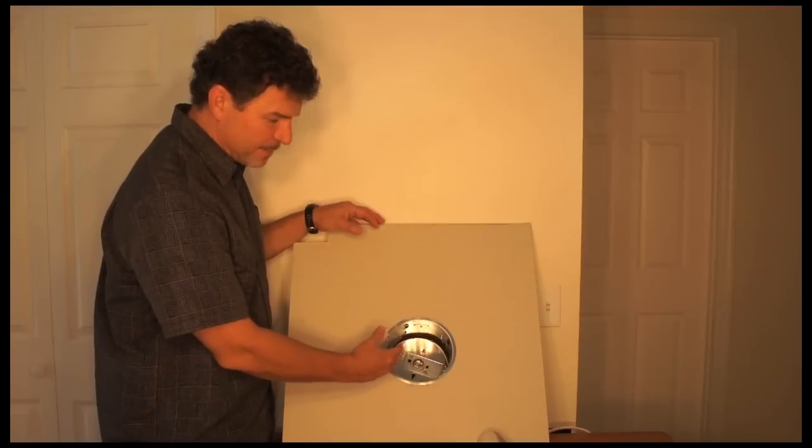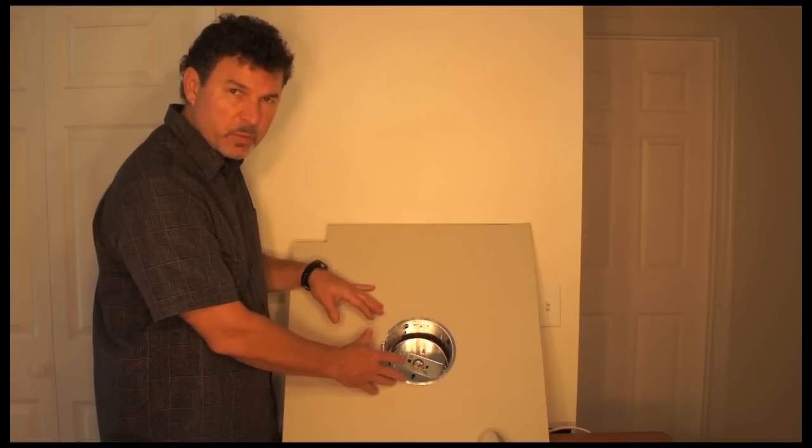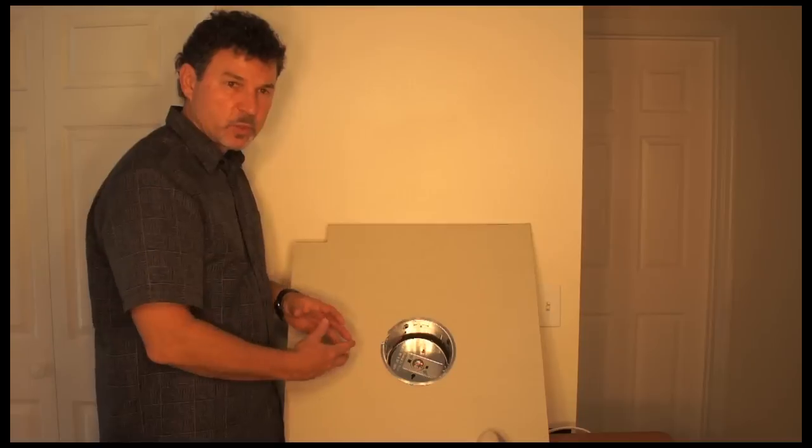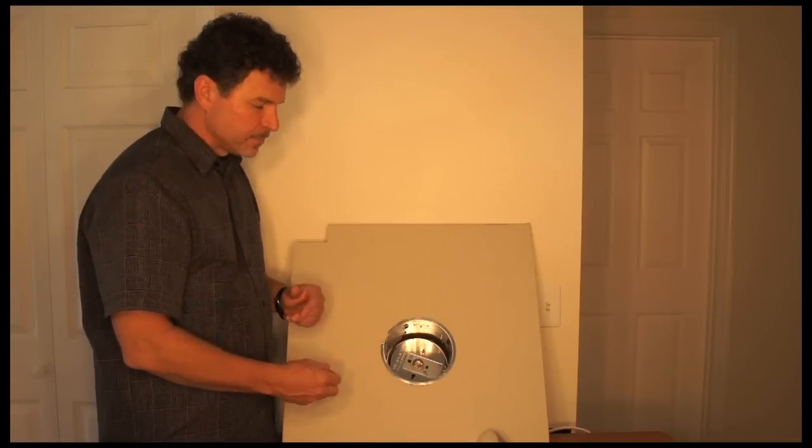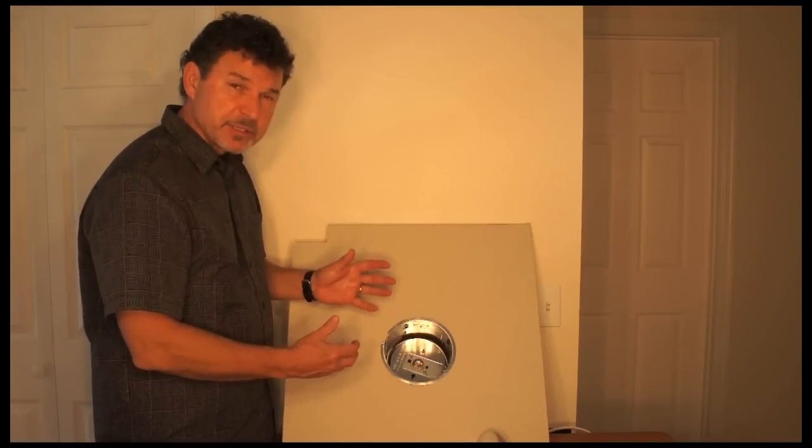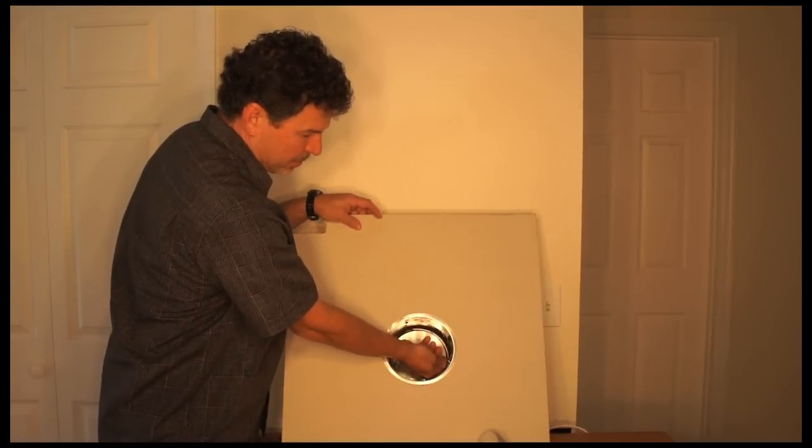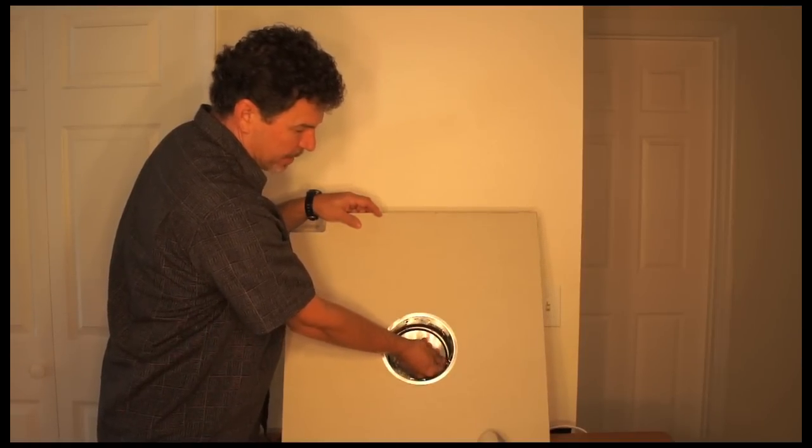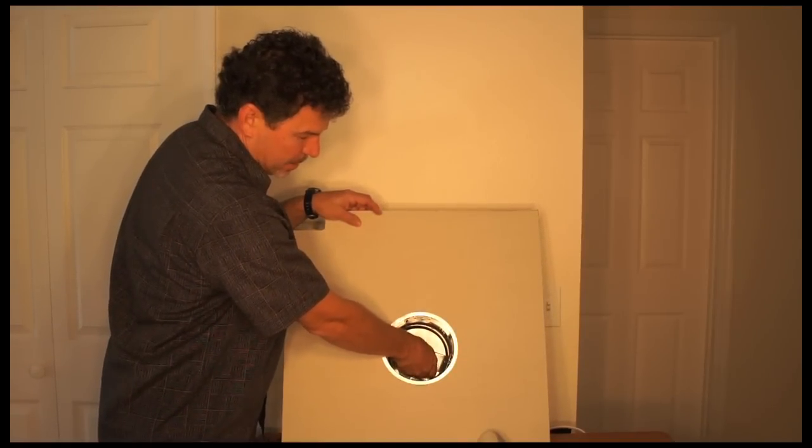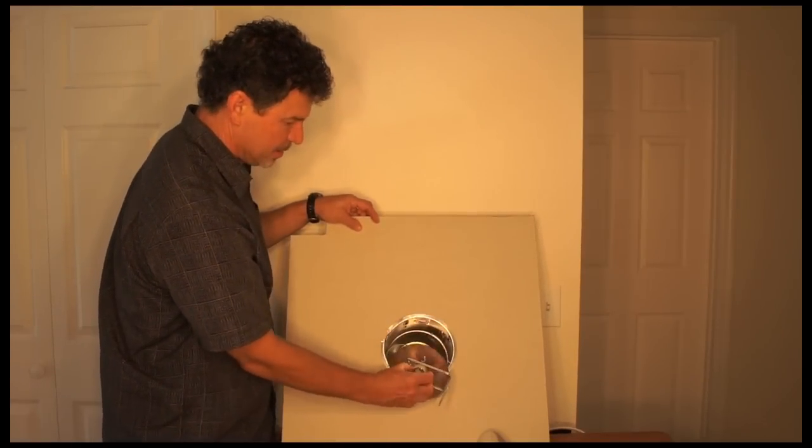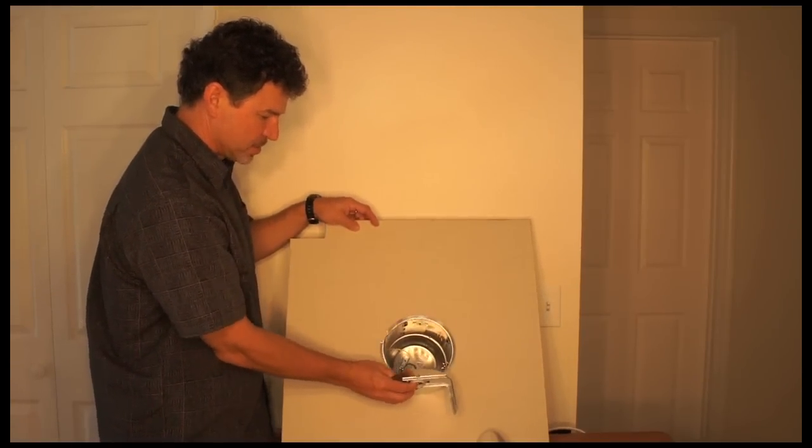The majority of the time, what will be wrong with the recessed fixture is the socket inside. The socket will either be worn or go bad, so we're going to replace it. In order to do that, I'm going to pull this socket down by unscrewing the wing nut, and here I have the socket exposed.